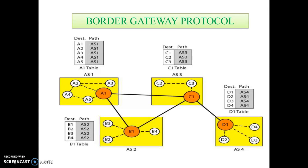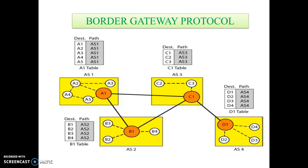Here we can see the Border Gateway Protocol diagram. There are four tables: A1 table, B1 table, C1 table, and D1 table — these are autonomous systems connected internally and externally. We can see the destination and paths of each table. A speaker in an autonomous system shares its table with immediate neighbors. Node A1 shares its table with nodes B1 and C1. Node C1 shares its table with nodes A1, B1, and D1. Node B1 shares its table with nodes A1 and C1. Node D1 shares its table with node C1.